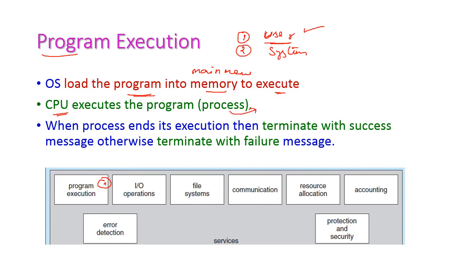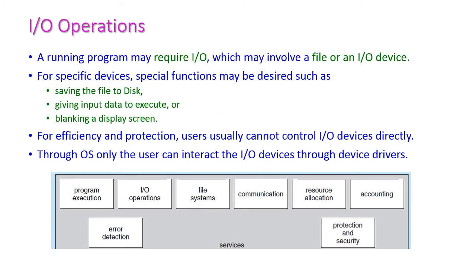Once the program executes successfully, the process will be terminated with a success message. If there is any error during process execution, the process will be terminated with a failure message. The next important operation is IO operation.